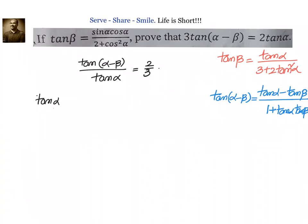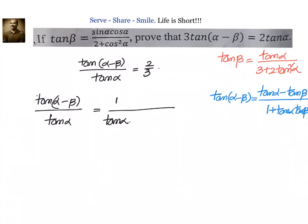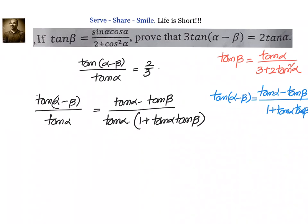What we need to prove is tan of α minus β divided by tan α equals 2 by 3. Let us go ahead and do that. Substituting tan β equals tan α divided by 3 plus 2 tan squared α into the formula, the numerator becomes tan α minus tan α divided by 3 plus 2 tan squared α.